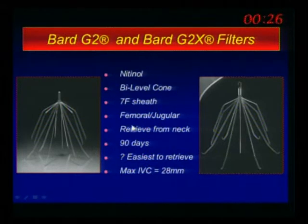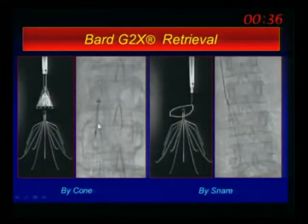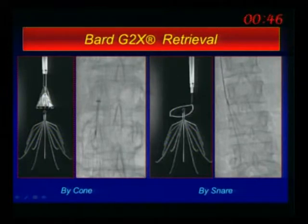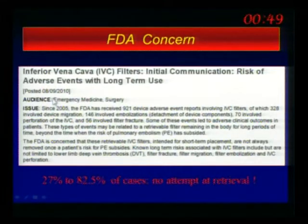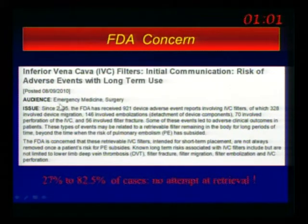The BARD G1 came off the market because it was embolizing — the limbs were fracturing. There's a big issue with newer filters and limb fracturing, so we have to be very careful. You have to retrieve it if that was the plan. The retrieval technique uses a snare or a cup catheter — it's easier to get it with a cup. You can put a balloon from below to push the hook out of the vena cava wall. There are different types of snares and biopsy forceps you can use.